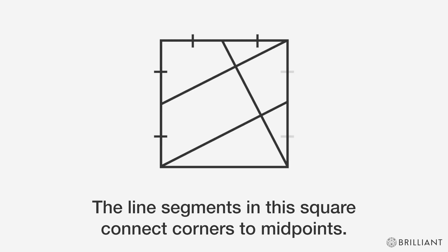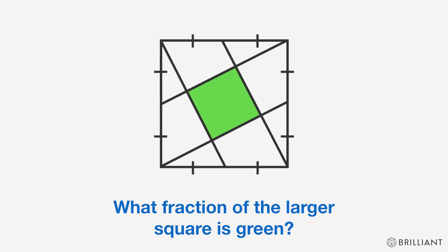The line segments in this square connect corners to midpoints. What fraction of the larger square is green?